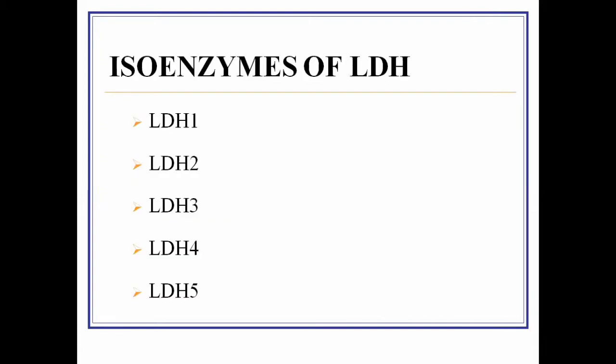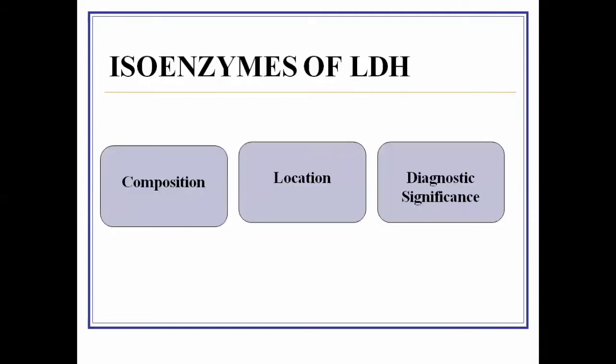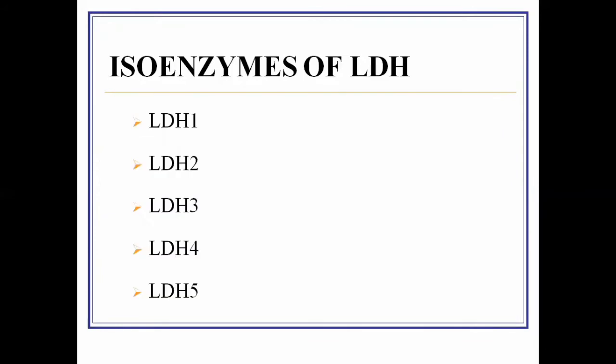The five isoenzymes of LDH are LDH1, LDH2, LDH3, LDH4, and LDH5. As discussed in a previous lecture, LDH isoenzymes are classified on the basis of electrophoretic mobility — they are separated by running them on electrophoresis according to fastest to slowest mobility.